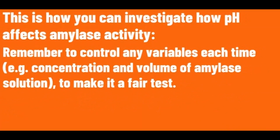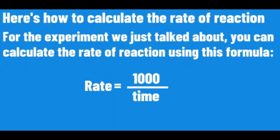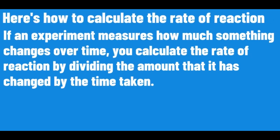Remember to control any variables each time to make it a fair test. It's often useful to calculate the rate of reaction after an experiment. Rate is a measure of how much something changes over time. For this experiment, you can calculate the rate of reaction using this formula: divide the amount that has changed by the time taken.